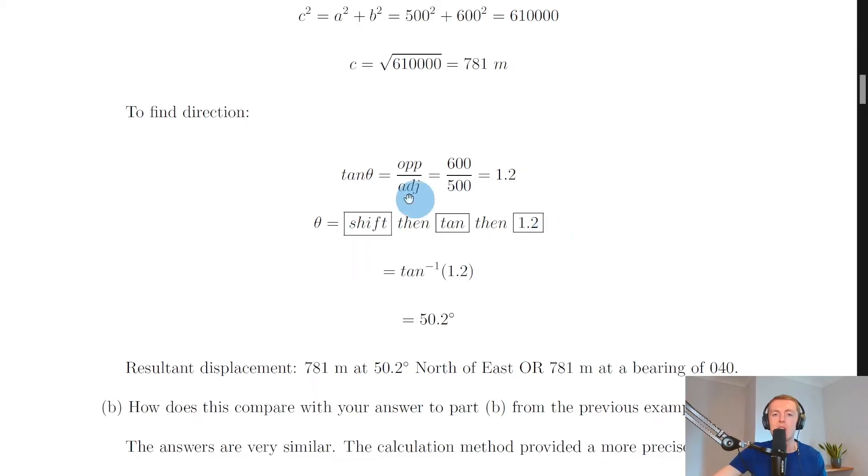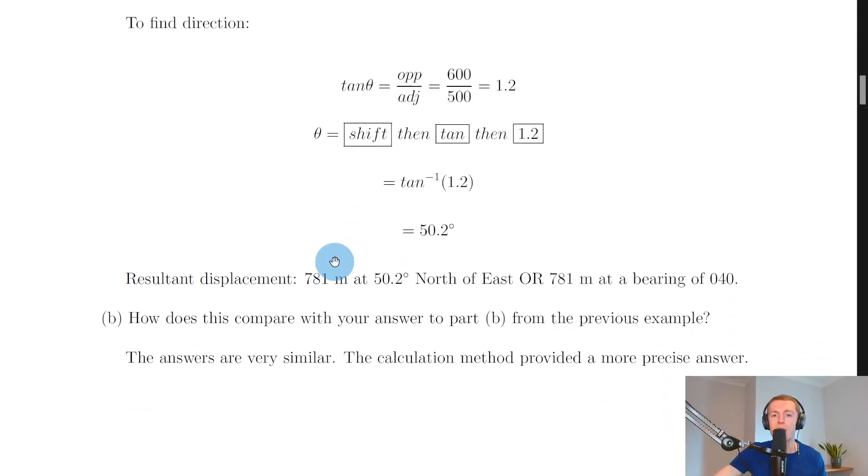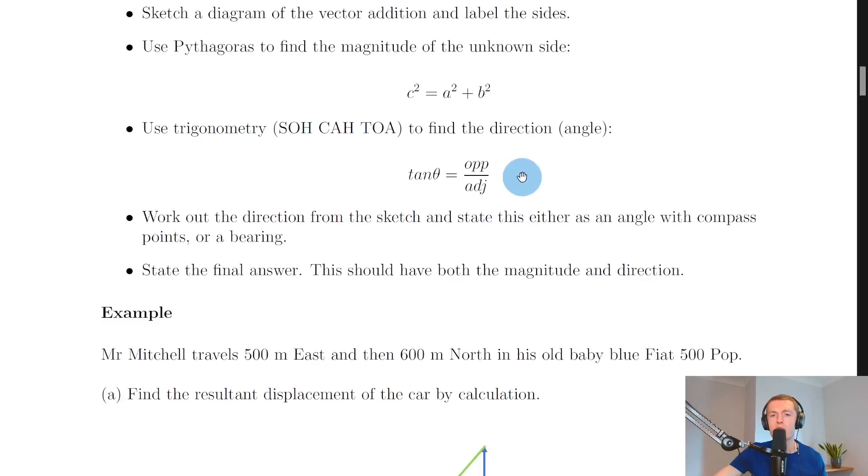Which if you put into your calculator gives you 50.2 degrees. Now remember, just because we've got an angle that doesn't mean we've got a direction. We then need to use our angle to work out the direction. So next we work out the direction from the sketch and state this as either an angle with compass points or a bearing, just like we did for the scale diagram method. And then same as before, we want to state the final answer, and this should have both the magnitude and direction.